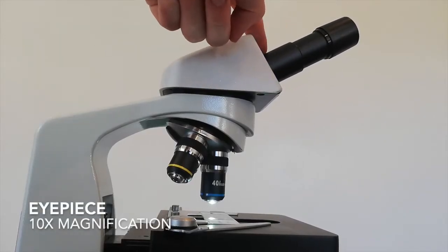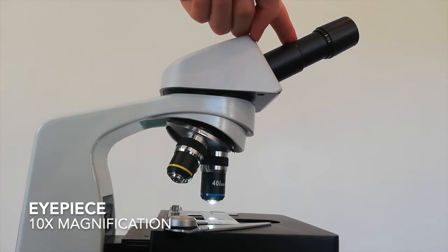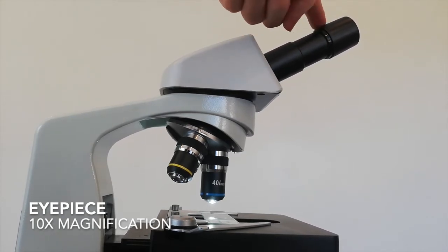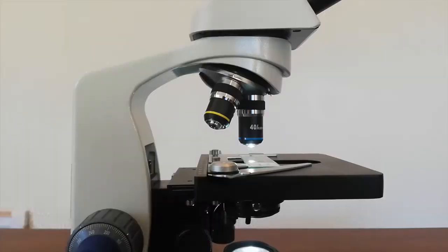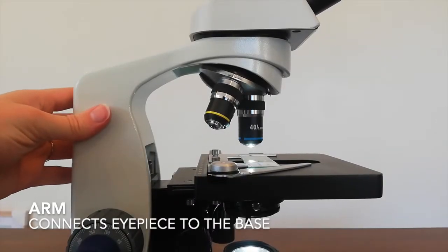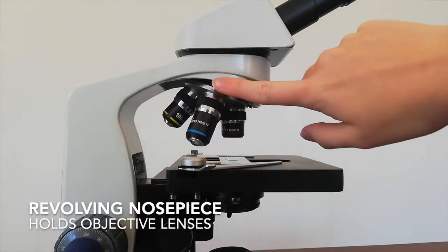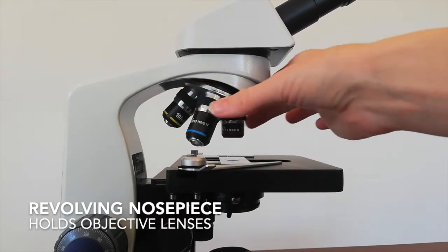This is the eyepiece of the microscope. It has a magnification of 10 times and this is what you look through. This piece here is called the arm. Then we have the revolving nose piece.